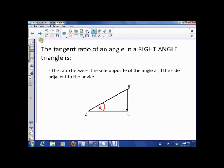Make sure you have your scientific calculator right by your side. Let's review: the tangent ratio of an angle in a right angle triangle is the ratio between the side opposite the angle and the side adjacent to the angle. Here's the reference angle, this is the side opposite, and this is the side adjacent.